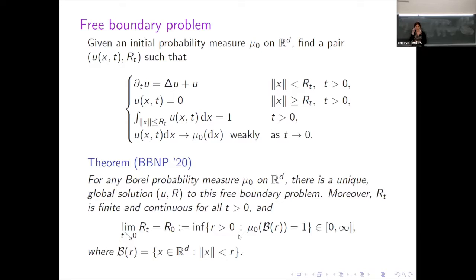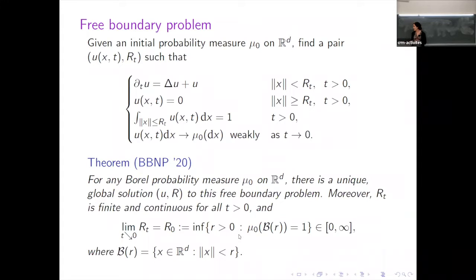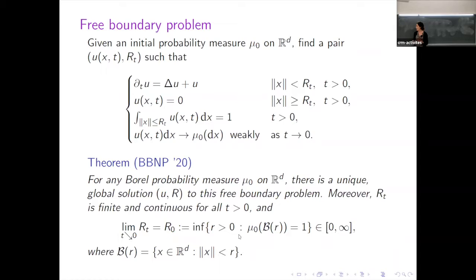The fourth equation is just the initial condition. It's not obvious that the solution to this system exists, but it turns out it does and it's unique. We can show that for any Borel probability measure μ_0 on R^d, there exists a unique global solution u and R to this free boundary problem.